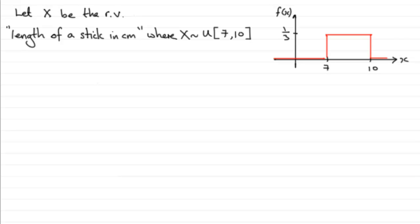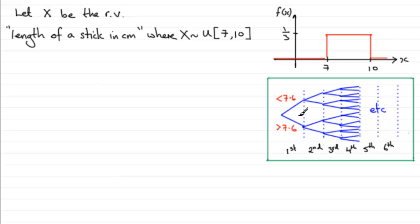Now, to do something like this, what I'm thinking of is a tree diagram, something like this, where we're looking at the six sticks. And if you take any stick, it will either have a length that is less than 7.6 centimeters or greater than 7.6 centimeters. And we know that we're looking for four of the sticks to be shorter than 7.6 centimeters to win this toy.